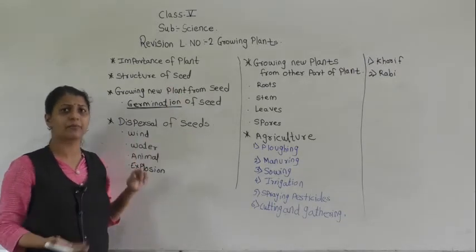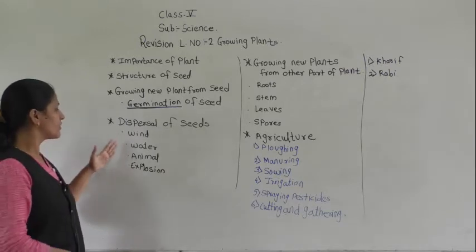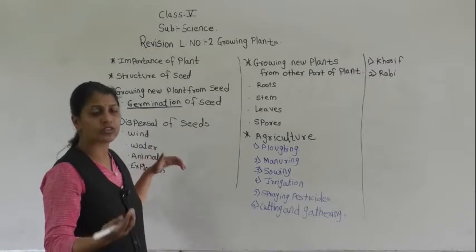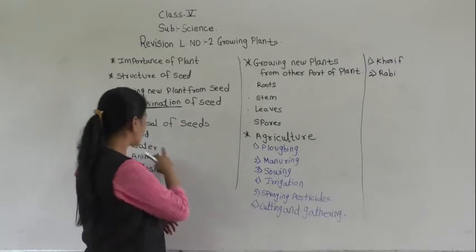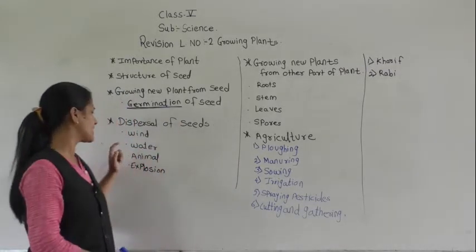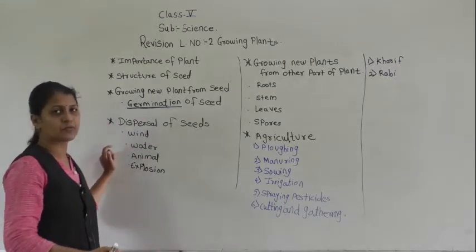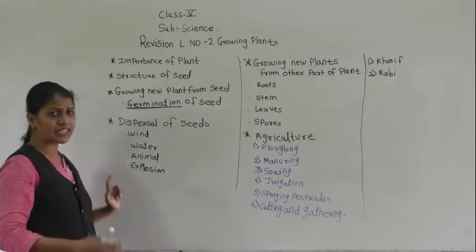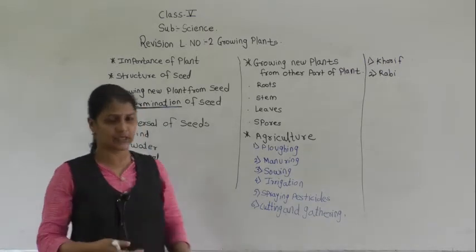Dispersion of seeds can take place by four ways: by wind — the wind can blow seeds that are very light from one place to another, for example cotton seeds; by water, for example coconut; then by animals; and by explosion.